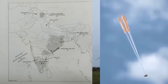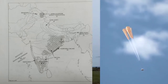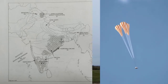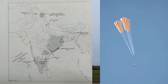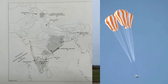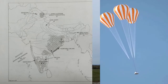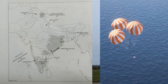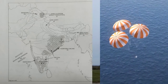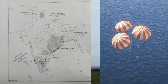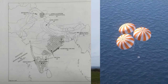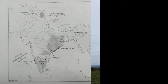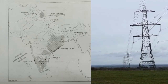Mark with a dot and name Srinagar in Jammu and Kashmir. Mark and name one area of heavy rainfall — there is one area of heavy rainfall mentioned as 'I' — the Western Ghats area.